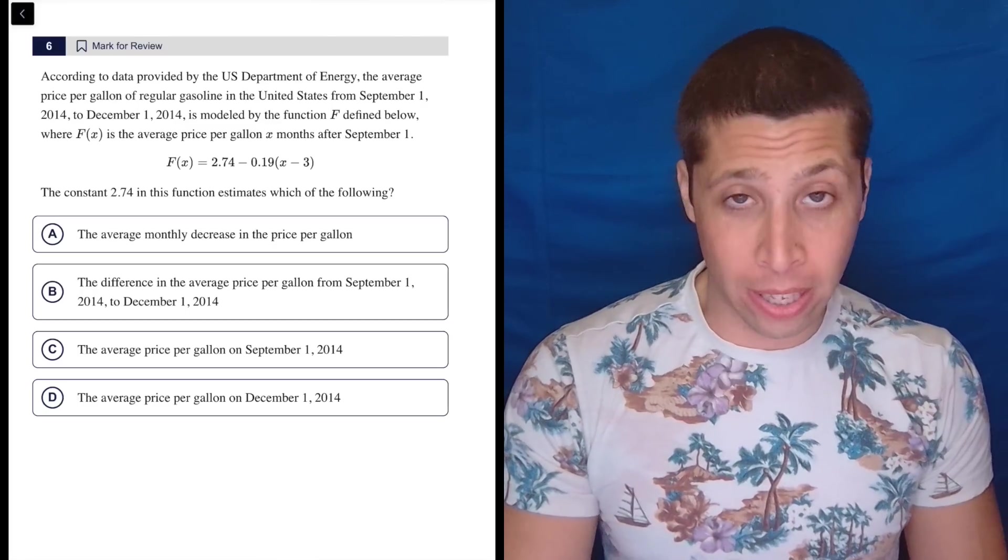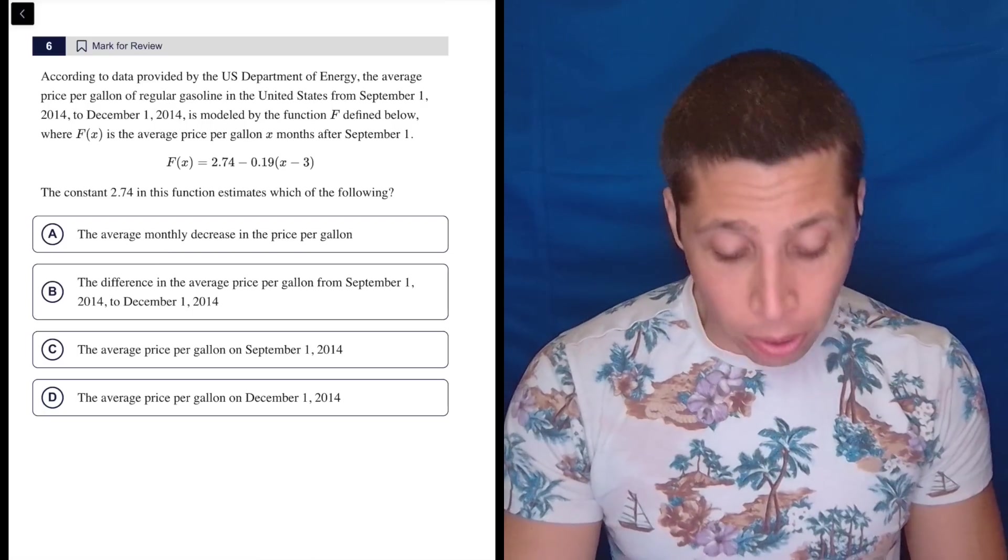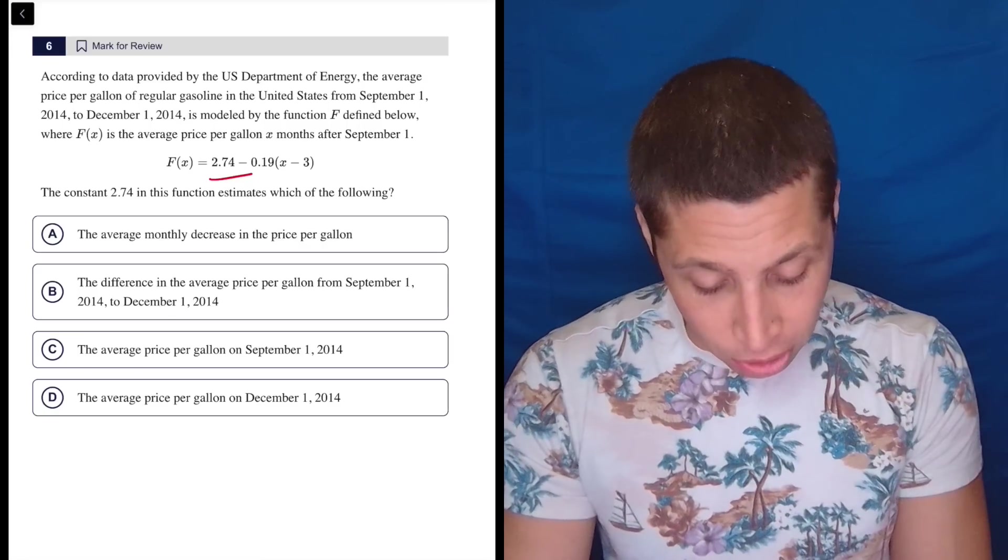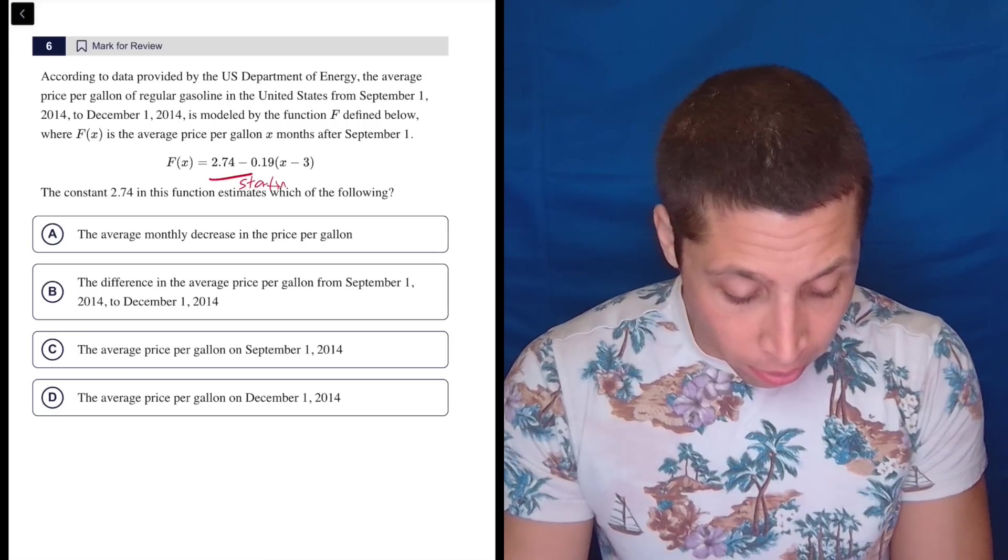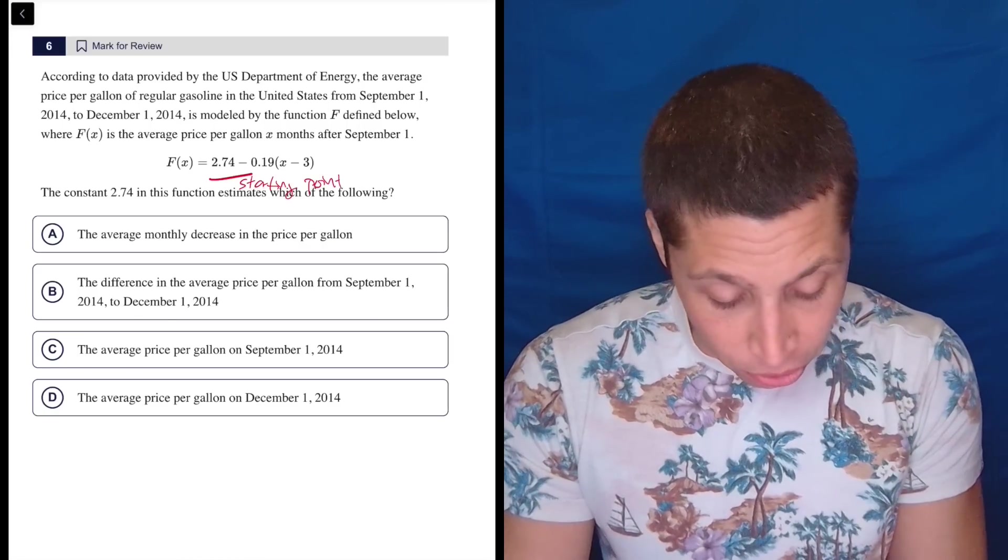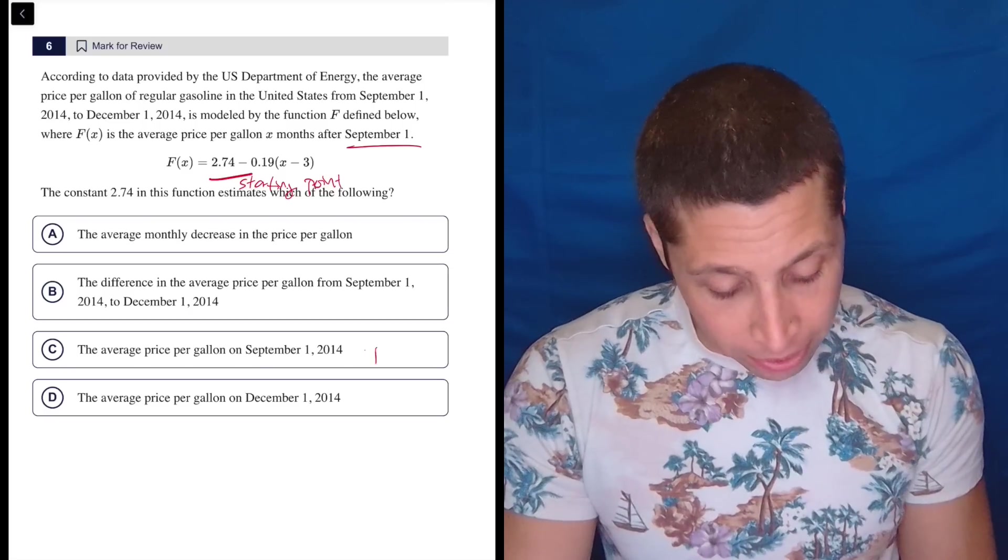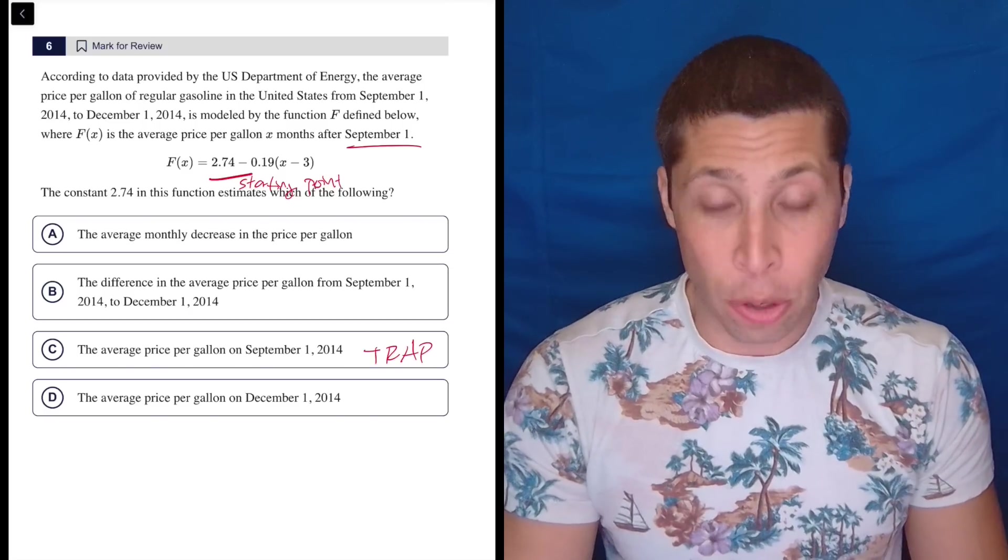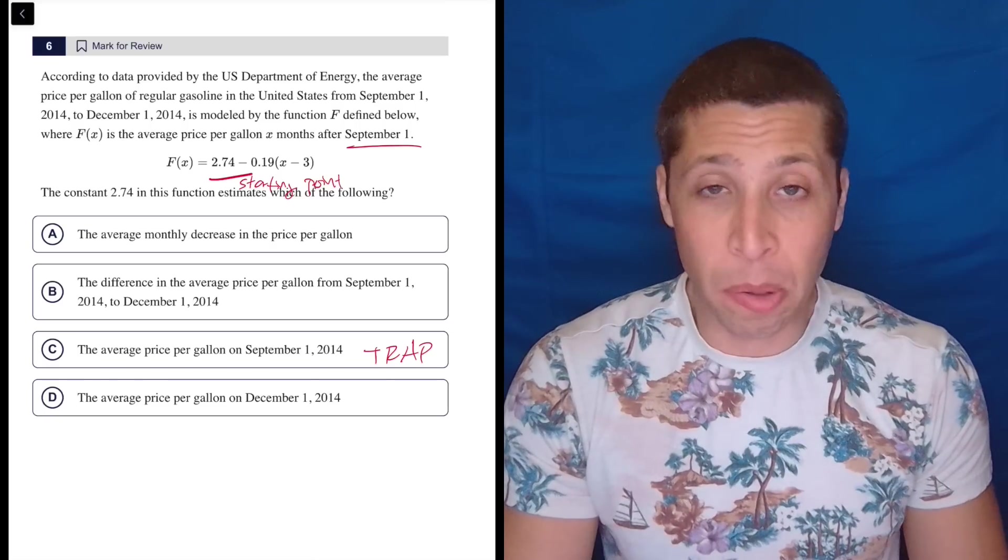So many of you are going to look at this and you're going to go, oh, 2.74, there's nothing attached, no x, that's the y-intercept, right? So that's the starting point. So it's the starting point, which is September. So you're going to pick this, and you're going to be wrong. And you should have recognized that you'd be wrong.